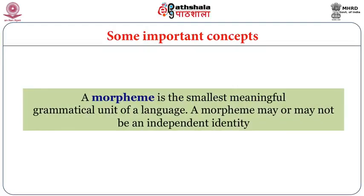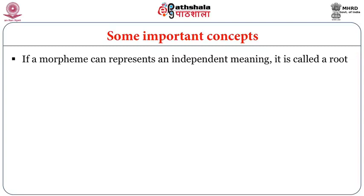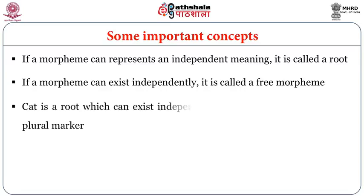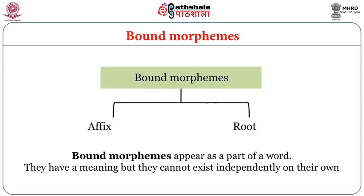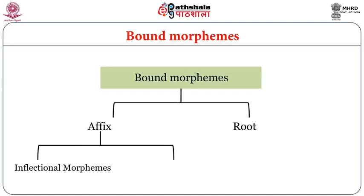A morpheme is the smallest meaningful grammatical unit of a language. A morpheme may or may not be an independent identity. If it can represent independent meaning, it is called a root. If it can exist independently, it is called a free morpheme. For example, 'cat' is a root that can exist independently, but when we add 's', that 's' is a plural marker with no independent meaning — it is a bound morpheme. Bound morphemes are further classified into inflectional and derivational morphemes.